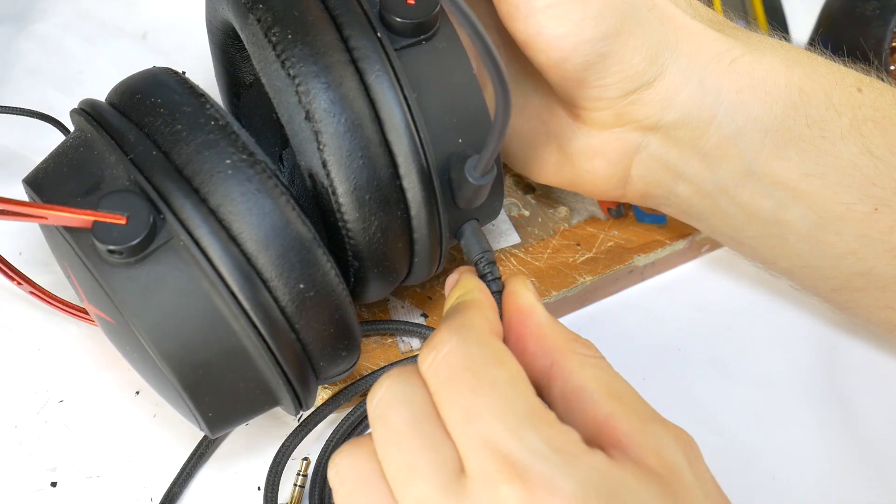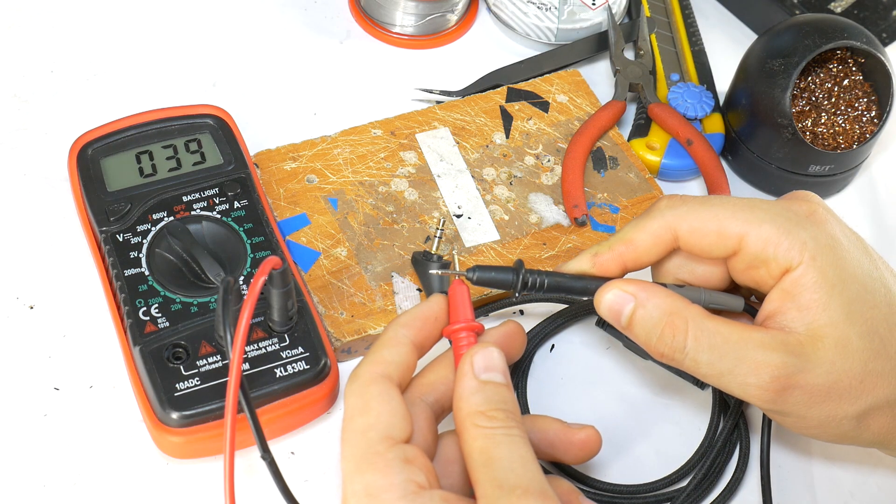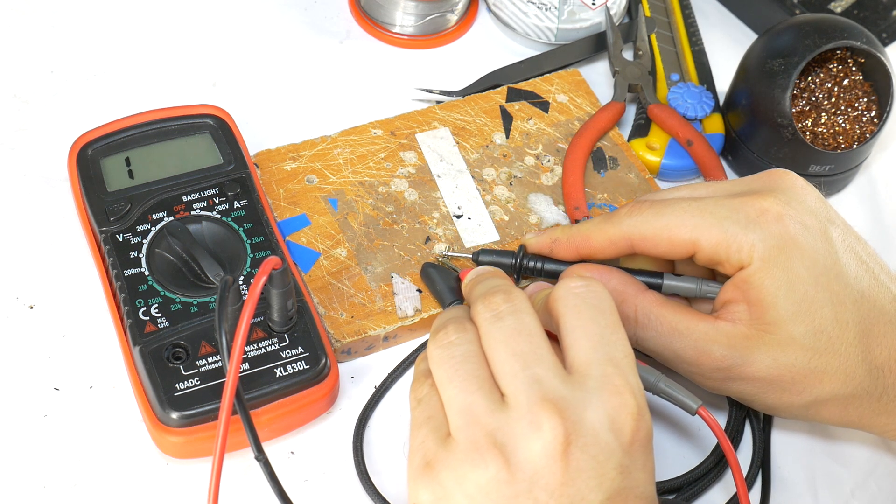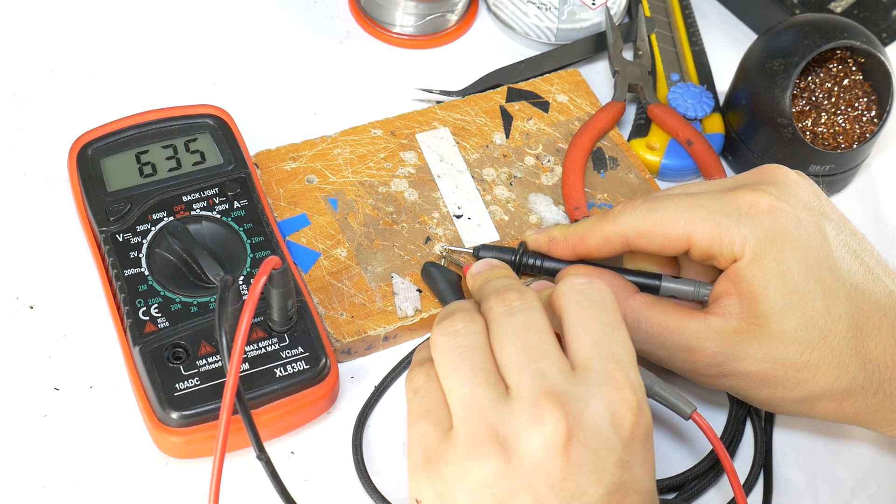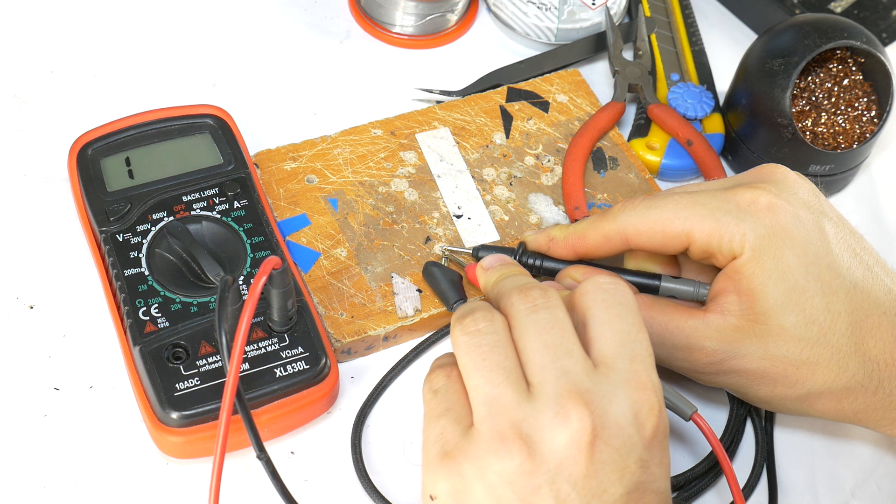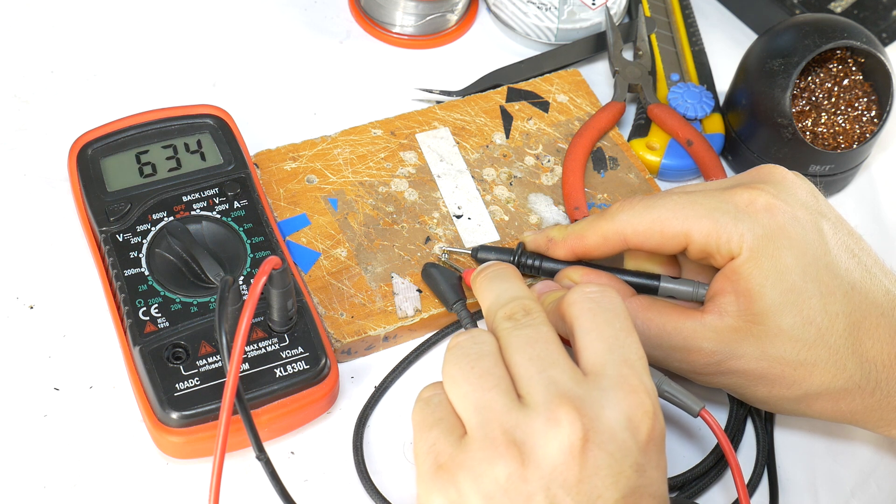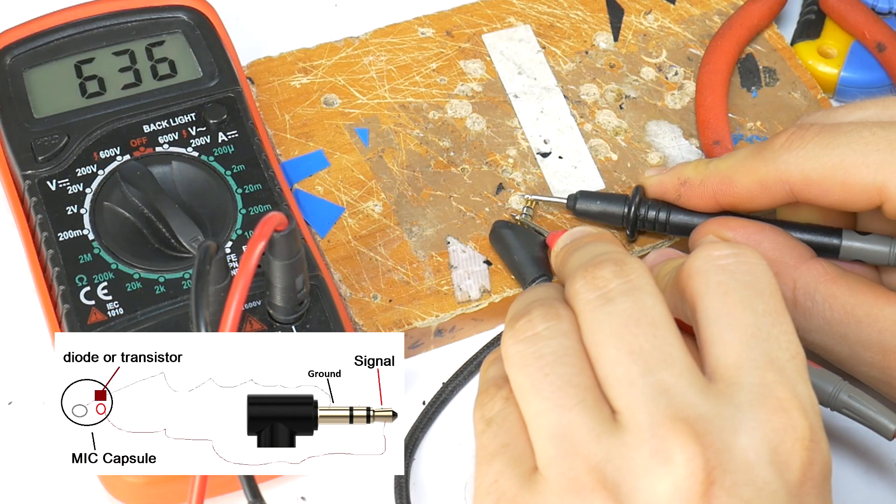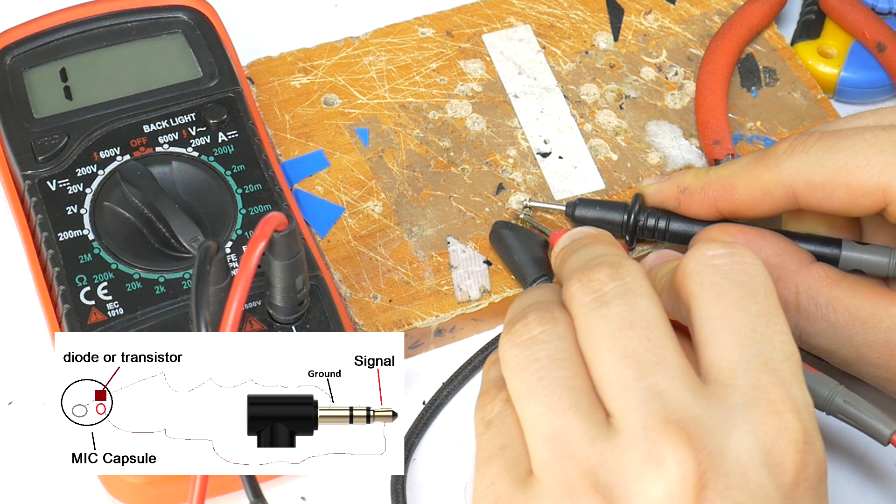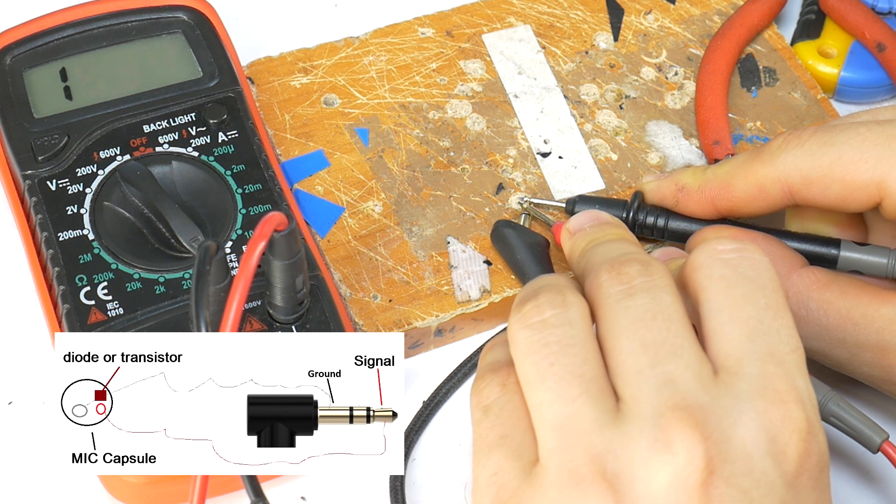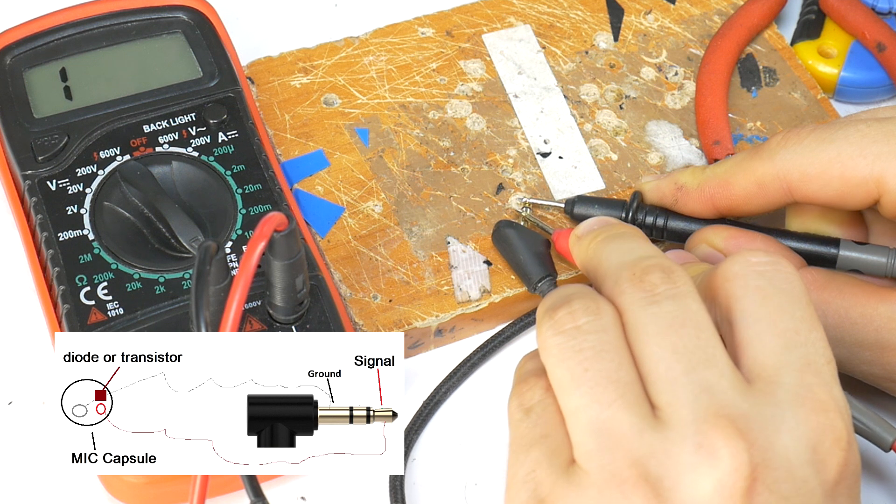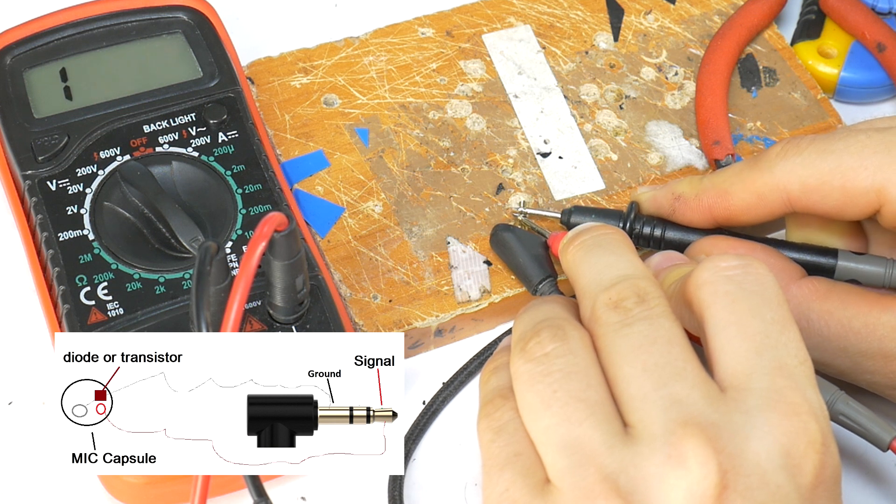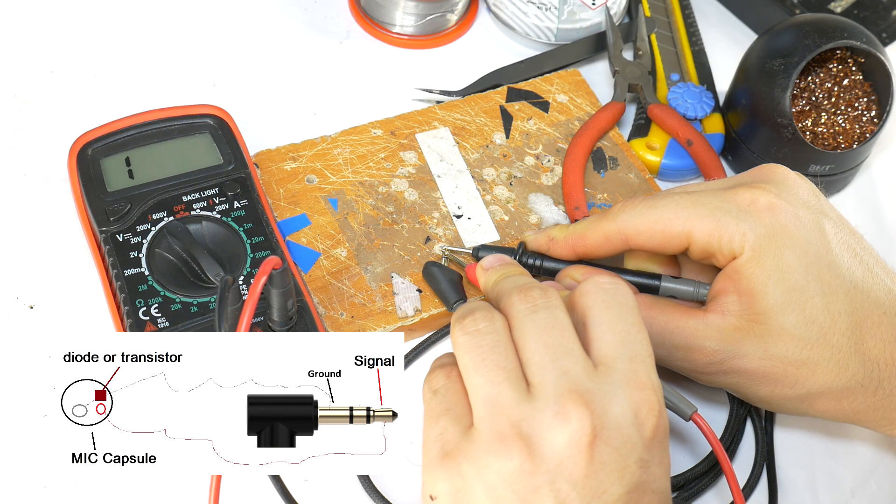First, disconnect the mic and audio cable. Set your multimeter to resistance mode and test the mic to see if the wires are damaged. Check for a connection between the mic contacts. This means both wires reach the mic capsule and the mic isn't the problem. If the multimeter shows one indicating infinity, the mic is likely damaged. Keep in mind that most gaming headphones use condenser mics with a diode or transistor which allows current to flow in one direction. So, check the mic in both directions with the multimeter probes to ensure accuracy.